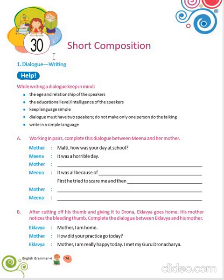Let's start chapter 30: Short Composition - Dialogue Writing. While writing any dialogue, we should keep in mind the following points: the age and relationship of the speakers, the educational level and intelligence of the speakers. Keep language simple. For example, a dialogue must have two speakers. Do not make only one person do the talking. Write in simple language.